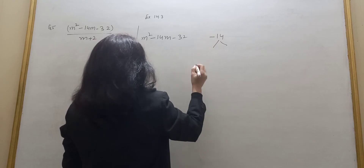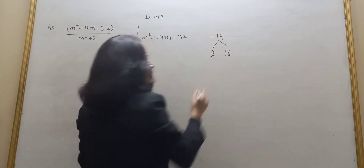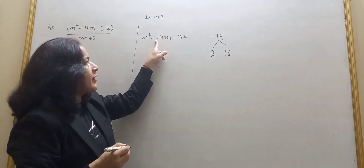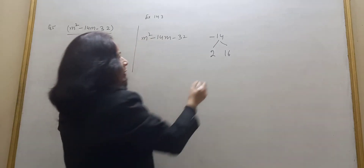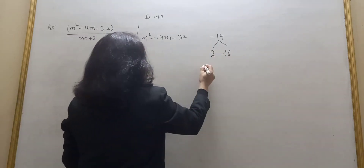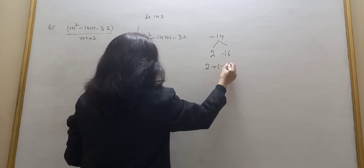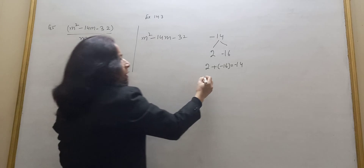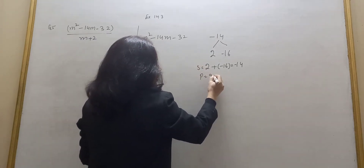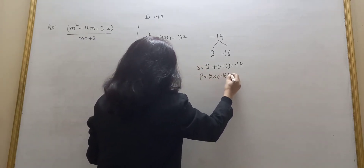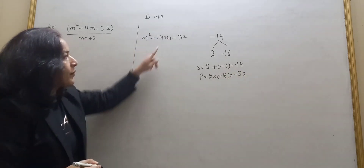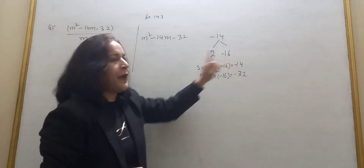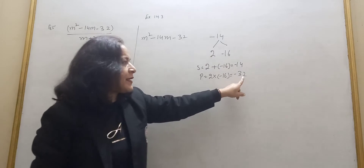So students, if I break minus 14 into 2 and 16: 2 into 16 is 32, but we need minus 14 here, so I have to take minus 16. Look: 2 plus minus 16 gives minus 14 — that's the sum. And the product: 2 into minus 16 gives minus 32.